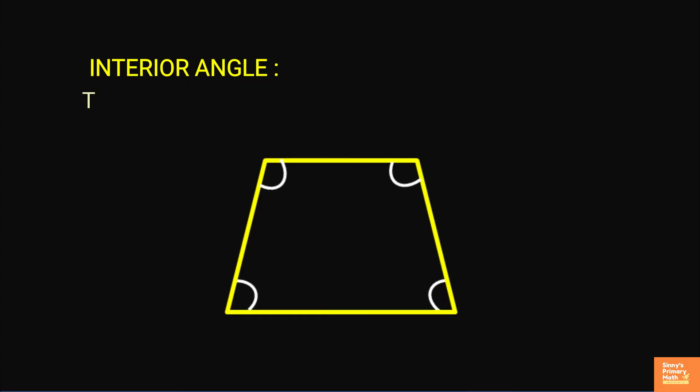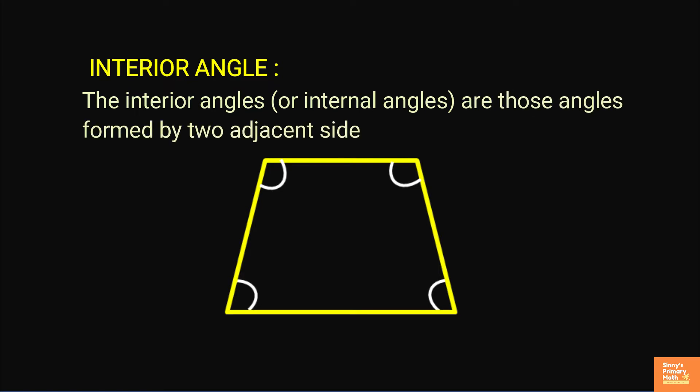Angles of polygons: All polygons have both interior angles and exterior angles. Interior angle - the interior angles or internal angles are those angles formed by two adjacent sides inside the polygon at each vertex. In a polygon with N sides, there are N vertices and N interior angles.